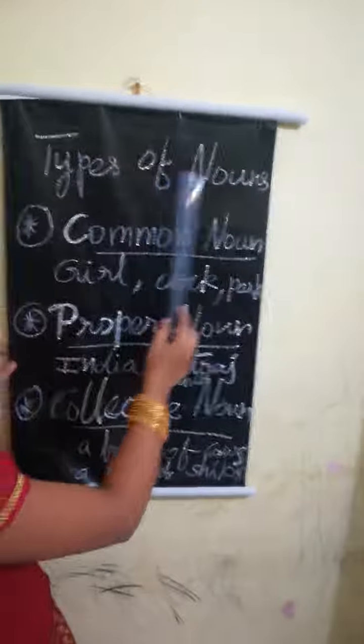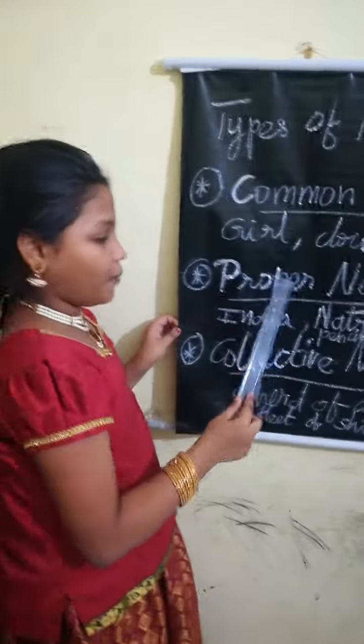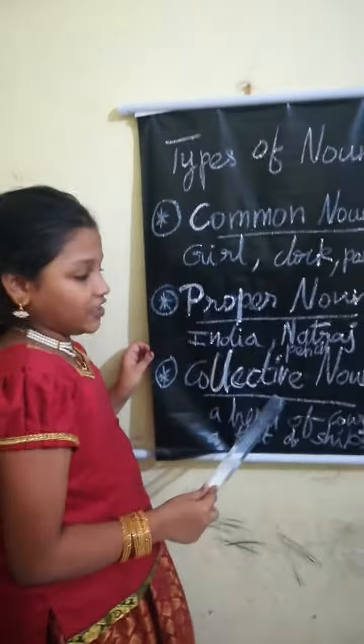Next, I am going to explain the three types of nouns. The three types of nouns are Common noun, Proper noun, and Collective noun. Common nouns are one of the types of nouns.